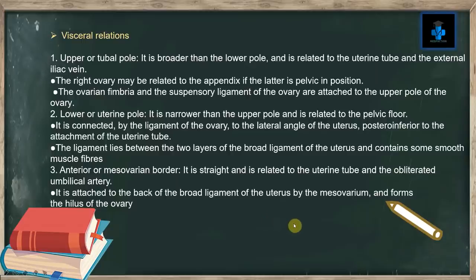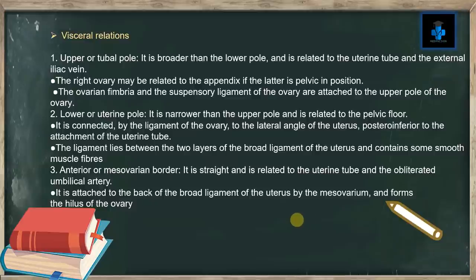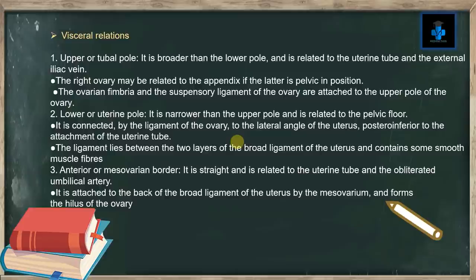Visceral relations: number one, the upper or tubal pole is broader than the lower pole and is related to the uterine tube and the external iliac vein. The right ovary may be related to the appendix if the latter is pelvic in position. The ovarian fimbria and the suspensory ligament of the ovary are attached to the upper pole. Number two, the lower or uterine pole is narrower than the upper pole and is related to the pelvic floor. It is connected by the ligament of the ovary to the lateral angle of the uterus, posterior inferior to the attachment of the uterine tube. The ligament lies between the two layers of the broad ligament and contains smooth muscle fibers.